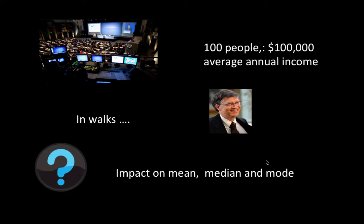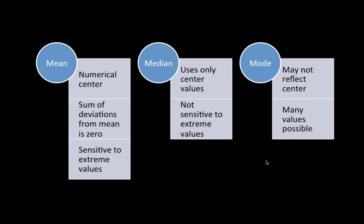Similarly, the mode — the most frequently occurring value — is usually not impacted at all by outliers. In fact, when somebody reports the mean of something to justify their point of view, your antennas should immediately go up and you should ask: can you please tell me the median? Many times when people want to mislead, they use the mean. In that sense, the median is usually a better representation of central tendency than the mean.